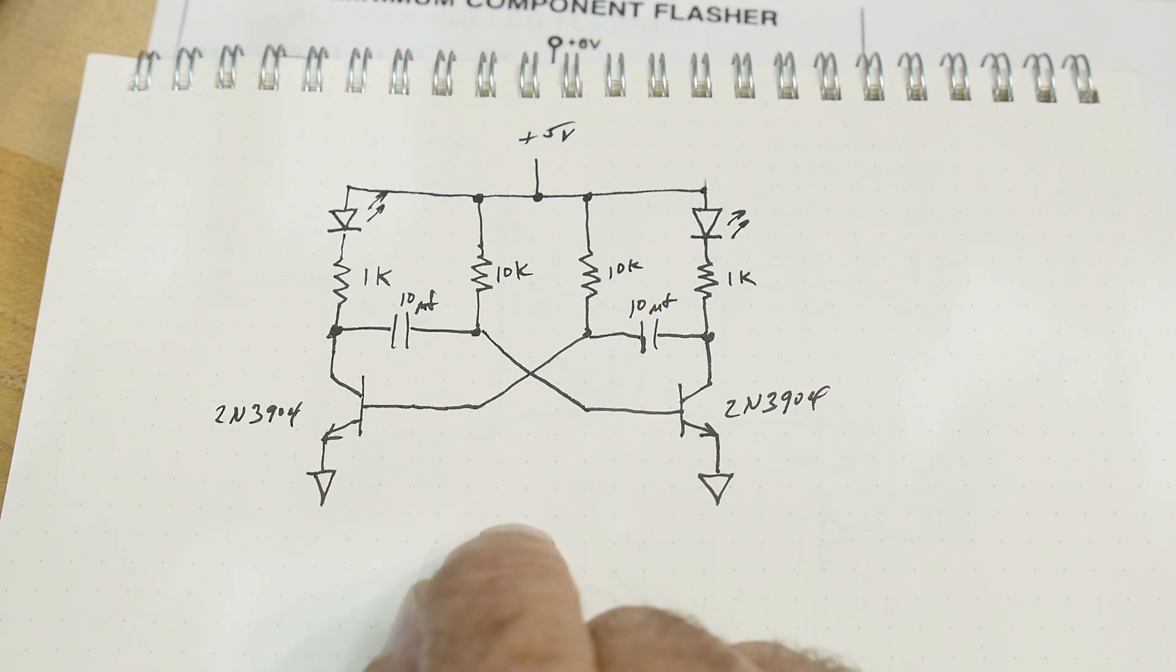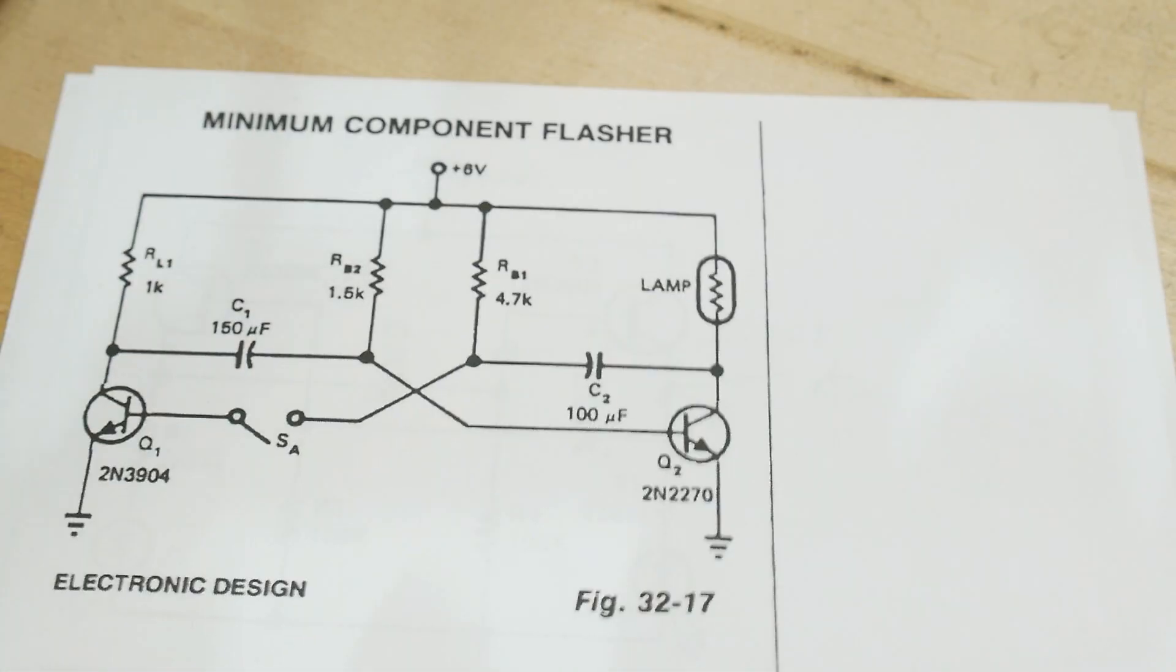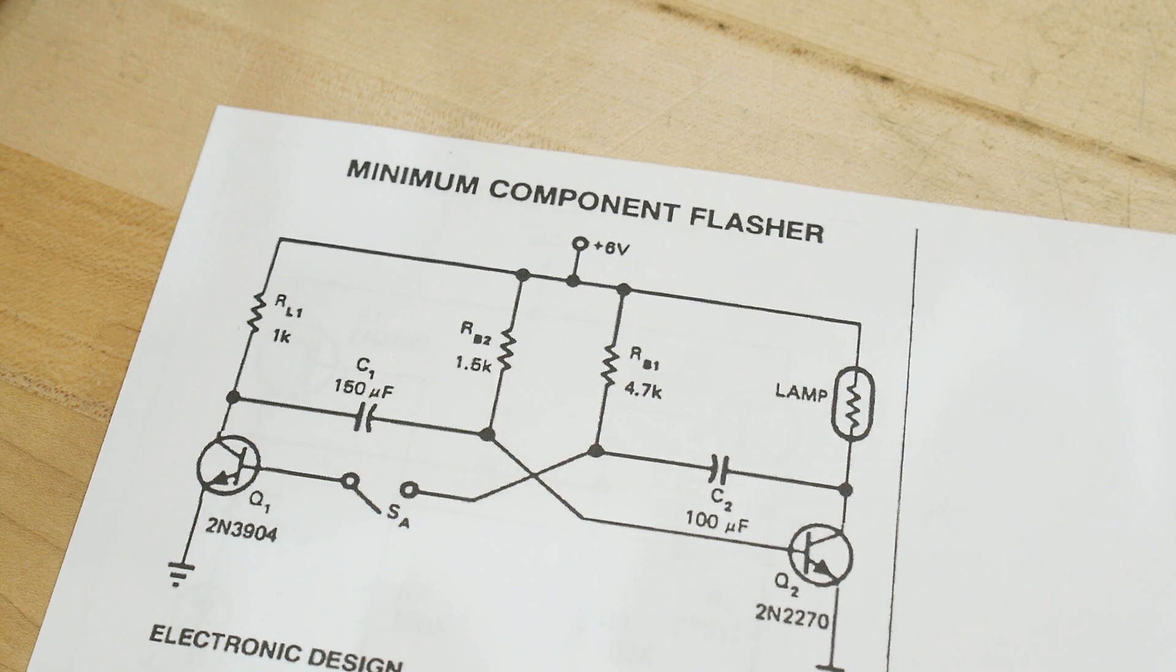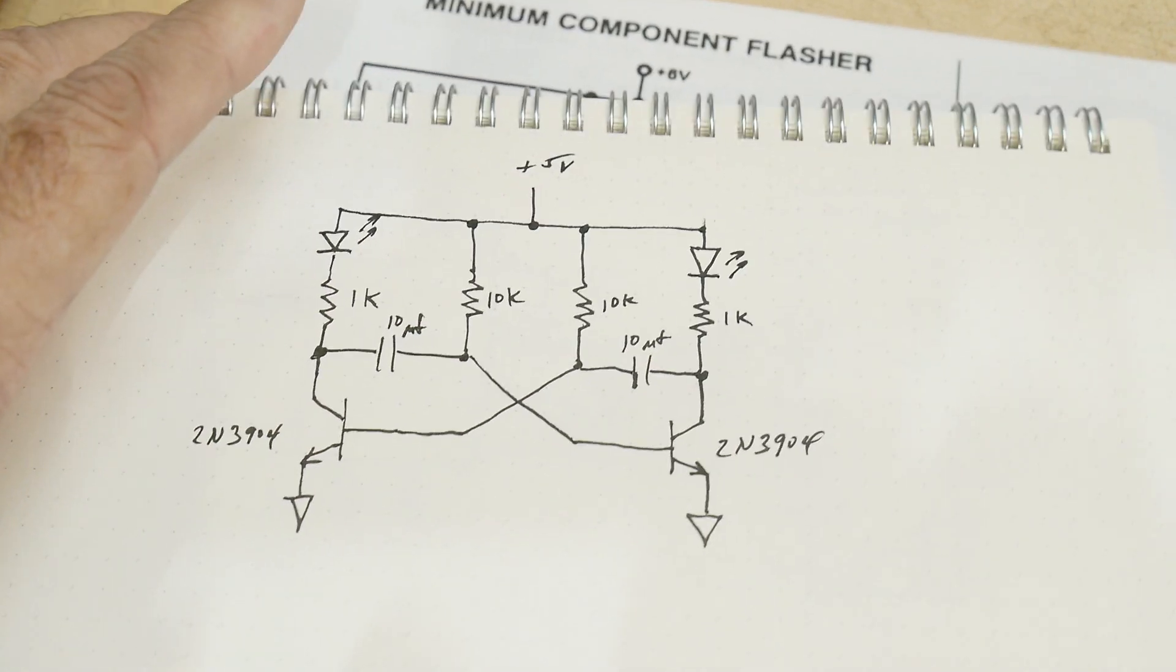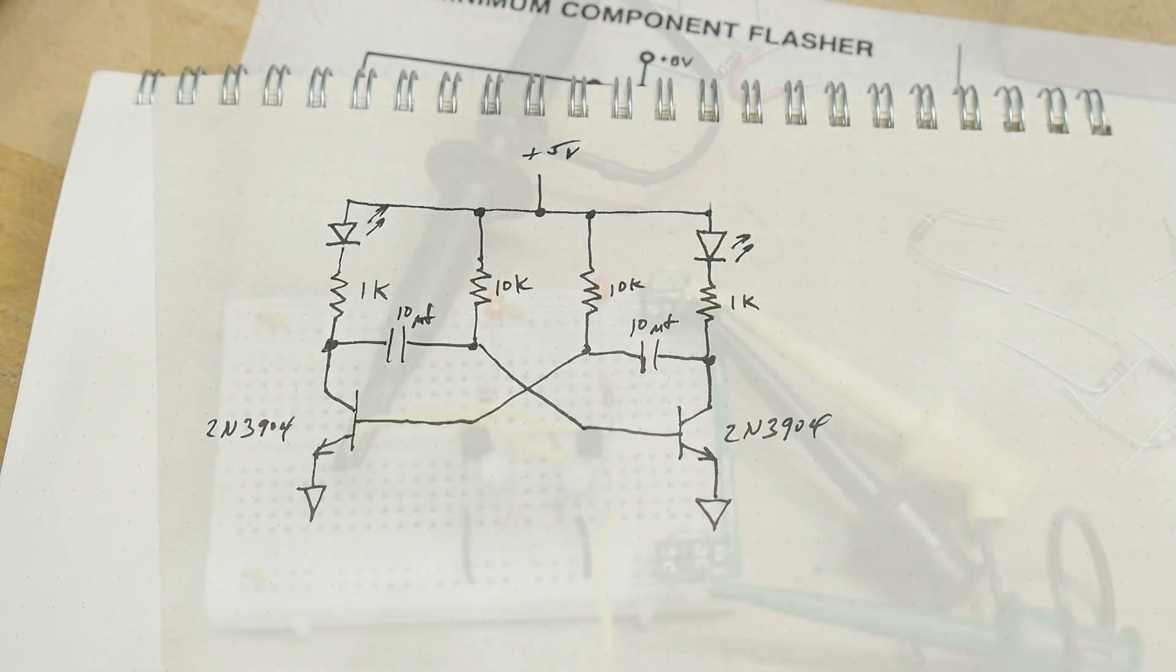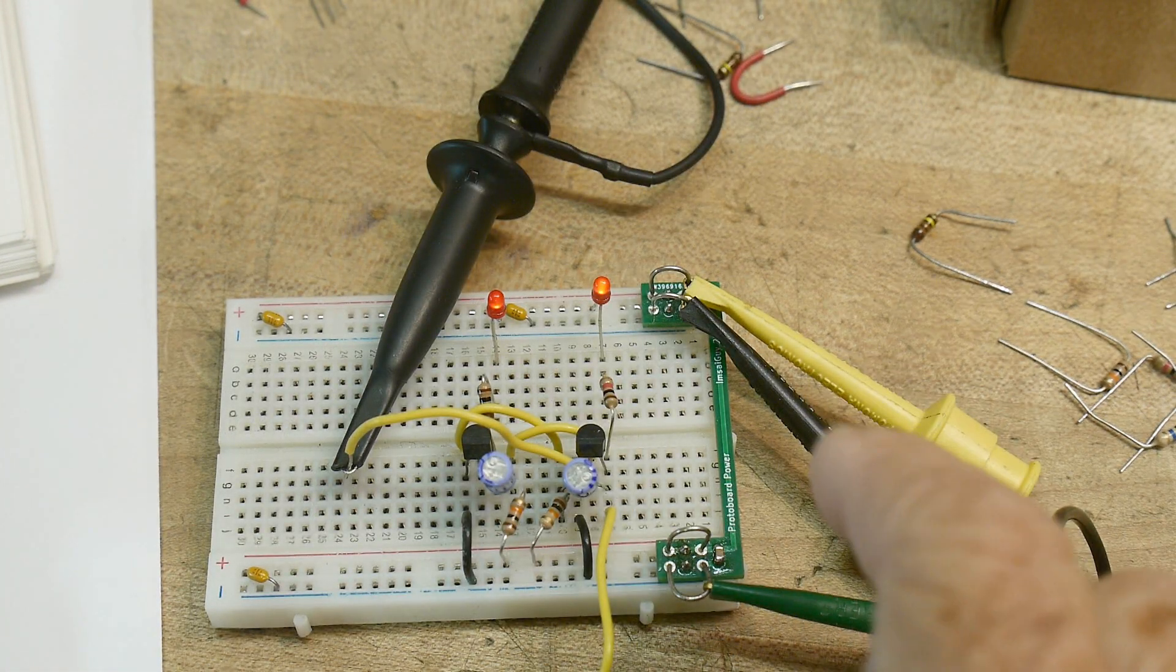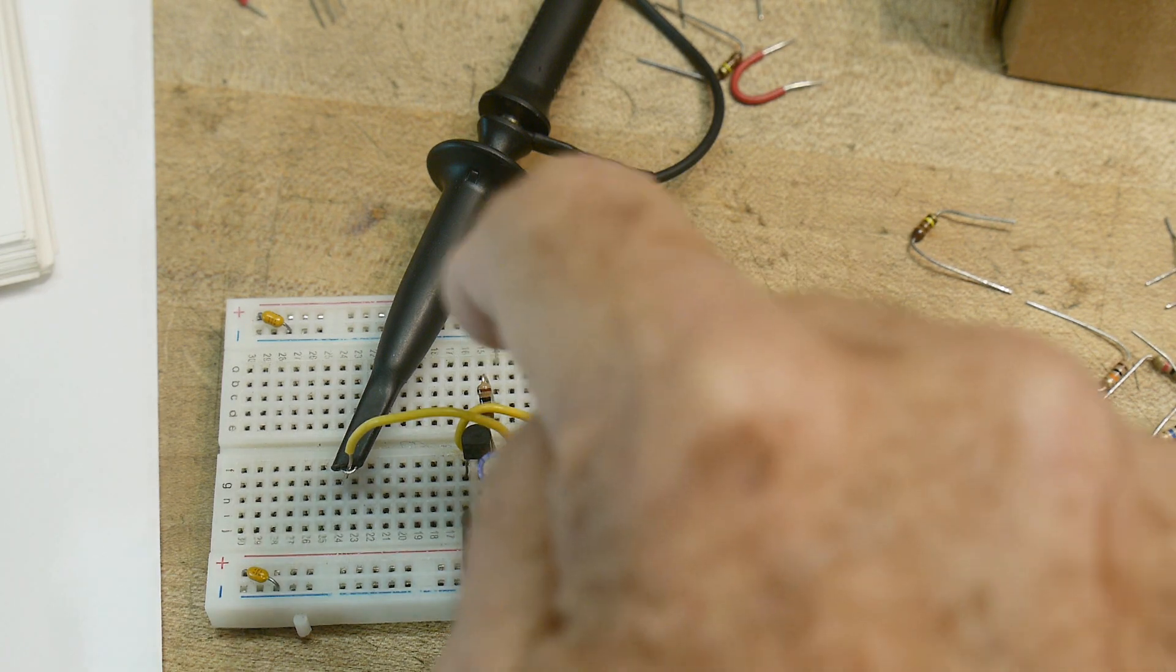This one is called - what do they call this one? They call this one a minimum component flasher. Minimum components. All right, so let's go look at the circuit again. Okay, so this is the left hand transistor, the right hand transistor, and the right hand LED.